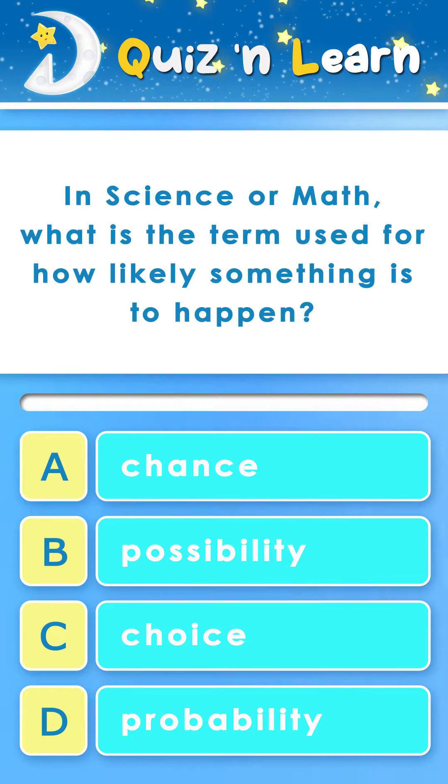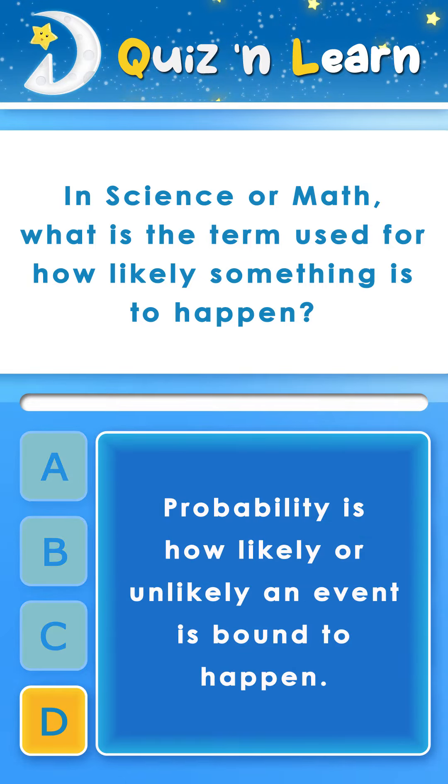The answer is D. Probability. Probability is how likely or unlikely an event is bound to happen.